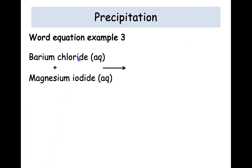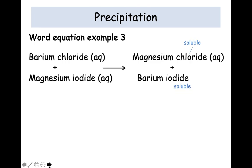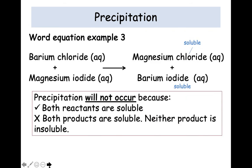Final example then, barium chloride and magnesium iodide. Both are soluble, so are AQ. If you swap your metals, you will get magnesium chloride and barium iodide. Magnesium chloride is soluble, therefore we put an AQ. Barium iodide is also soluble, so gets an AQ. Now you'll notice here, no solid has been formed. So precipitation will not occur because both reactants are soluble. However, both products are soluble. Neither product is insoluble. So this first criteria has been met, but the last one hasn't. So it's not precipitation in this example.